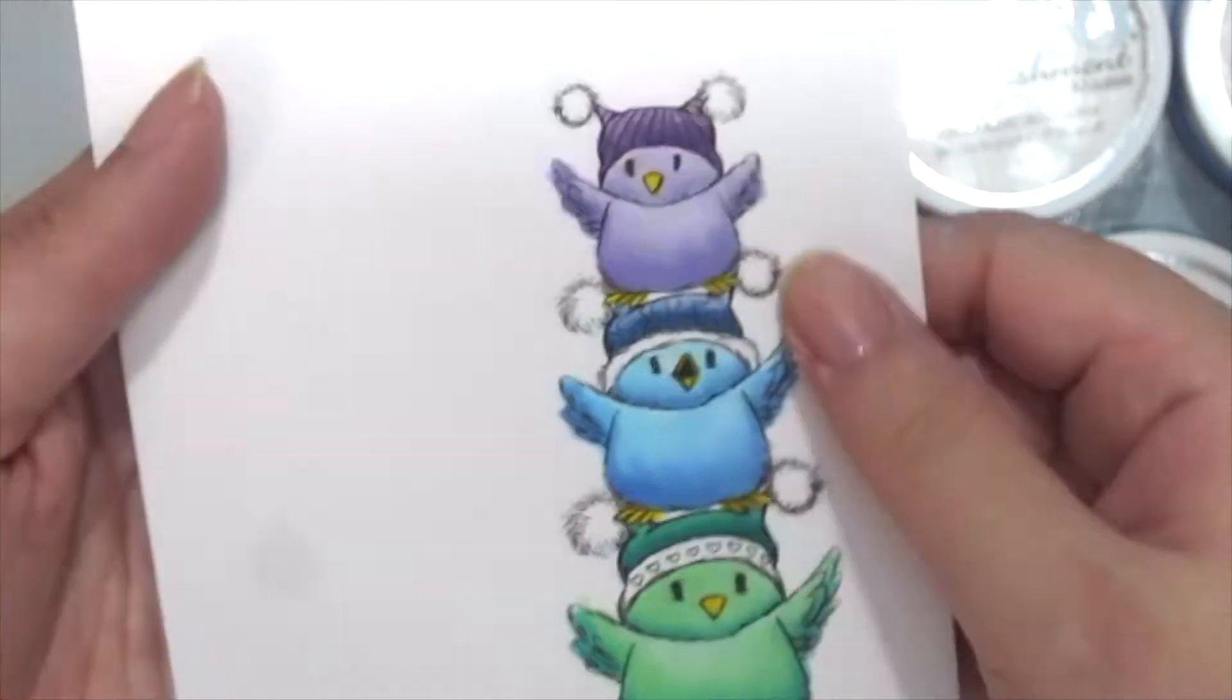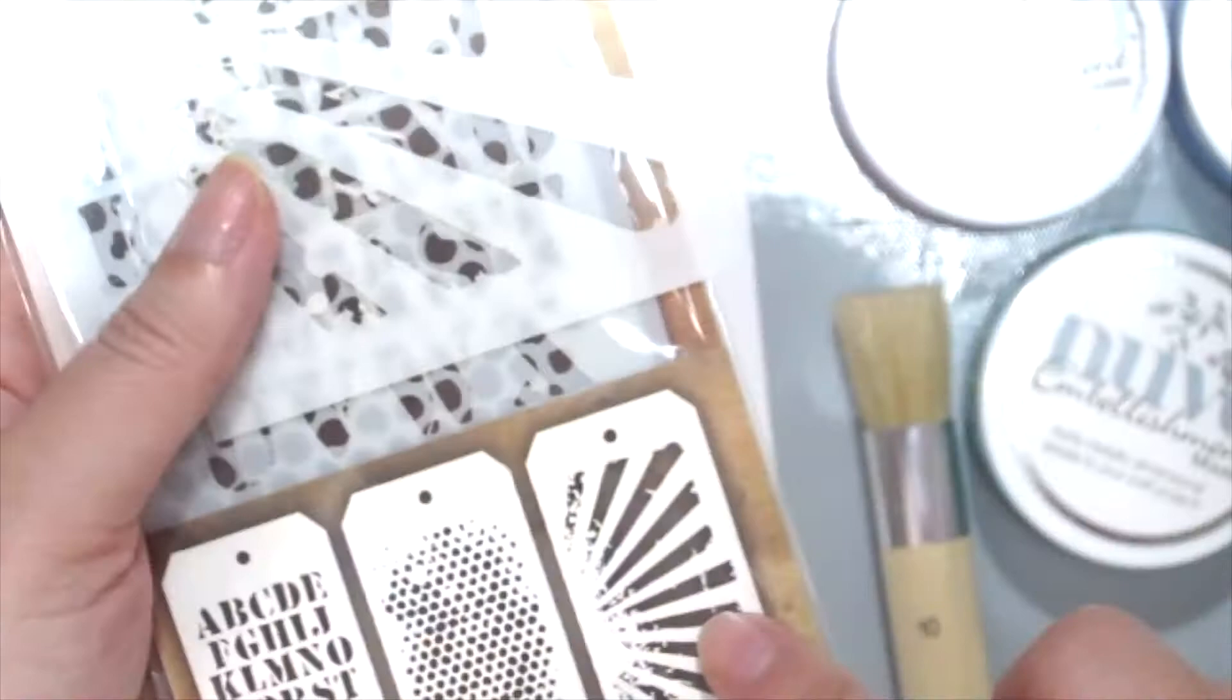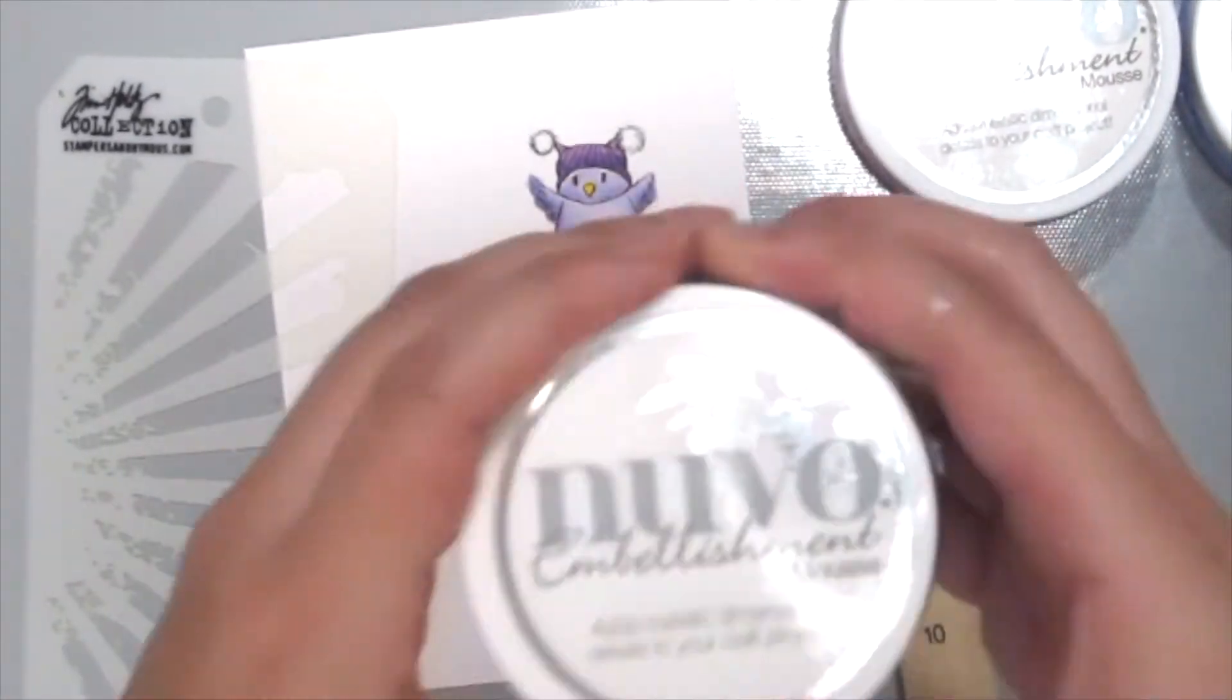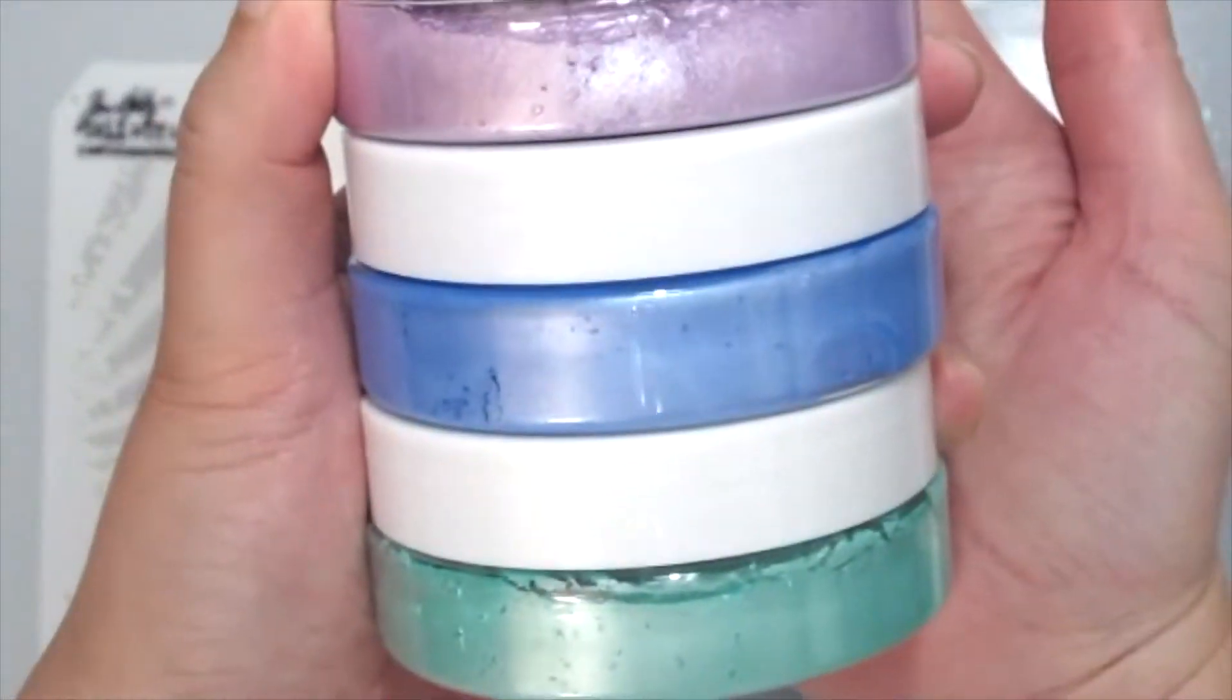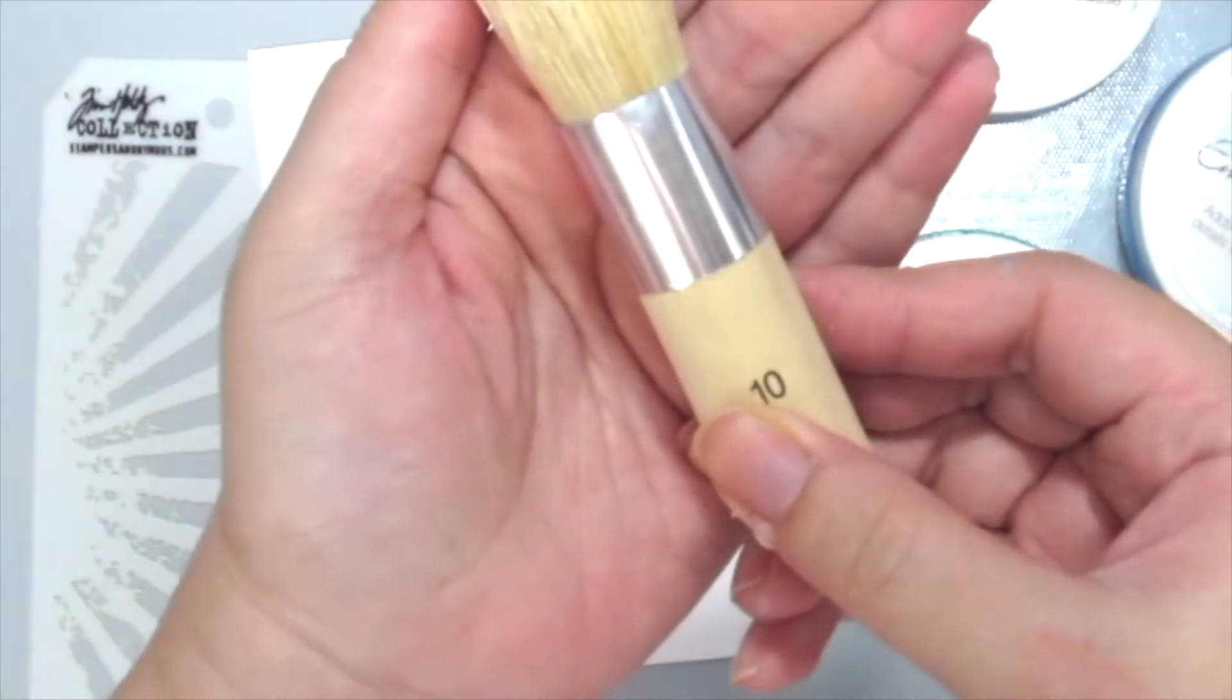First, I've already stamped these cute little birdies and colored them with Copic markers. I'm grabbing this Tim Holtz Mini Stencil Set with this sunburst stencil, and I'm grabbing of course my Nuo Moose Paste which is in three different colors here and also a stencil brush.